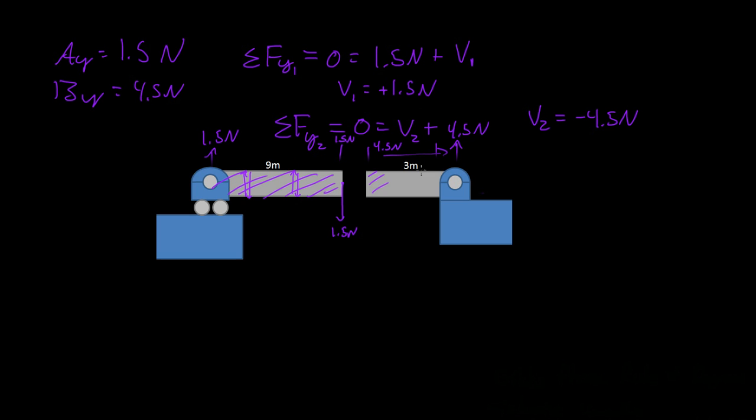And on this part, no matter where you looked at it, there's a shear of a negative 4.5 Newtons. This part is wanting to go down and this part is wanting to go up. So it has a negative 4.5 Newtons shear throughout the entire beam until it gets to that point. This part of the entire beam has a negative 4.5 Newtons shear.